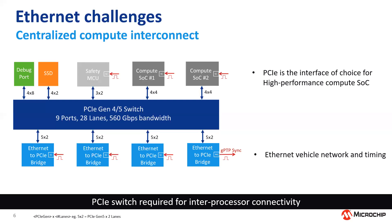So the interface of choice for high-performance compute devices is PCIe. That means we need some sort of PCIe switch to connect the Ethernet in-vehicle network to these compute platforms. With this example, you're going to need a Gen 4 or 5 type switch up to around 560 gigabits per second bandwidth. What we would advocate is that on-board PCIe is required for inter-processor connectivity, and then off-board across the in-vehicle network we have Ethernet for both the data and also the timing — using 802.1AS gPTP Ethernet-based time synchronisation across the network connected directly to those computers.